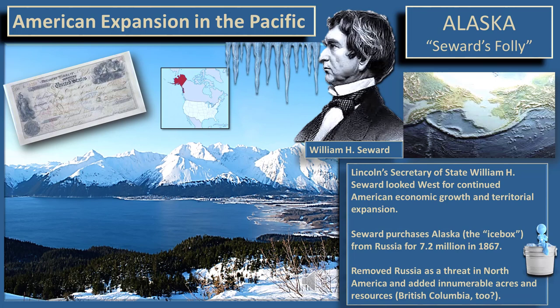In 1867, Seward negotiates a deal with the Russians to purchase Alaska for a whopping $7.2 million — chump change today. But in the day, it was viewed as a ridiculous waste of government money. They referred to this as Seward's Folly or Seward's Icebox. Looking back today, Americans can say thank God this guy did what he did, because there's more than $7.2 million in resources in Alaska.